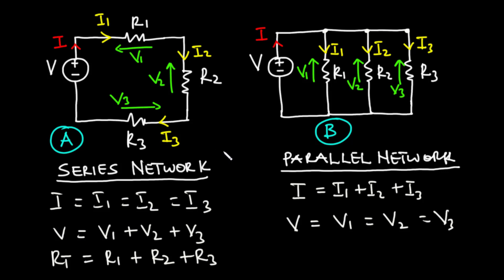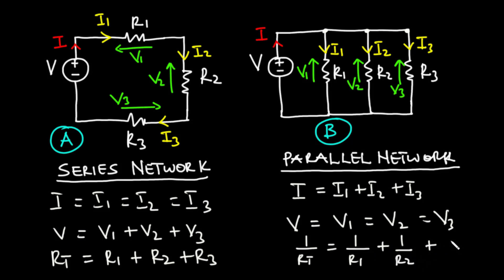For a parallel network, the reciprocal of the total resistance is equal to the sum of the reciprocals of the branch resistors, so that 1 over RT, which is the total resistance, is equal to 1 over R1 plus 1 over R2 plus 1 over R3. In the case where we have two resistors, then 1 over RT will be equal to 1 over R1 plus 1 over R2.